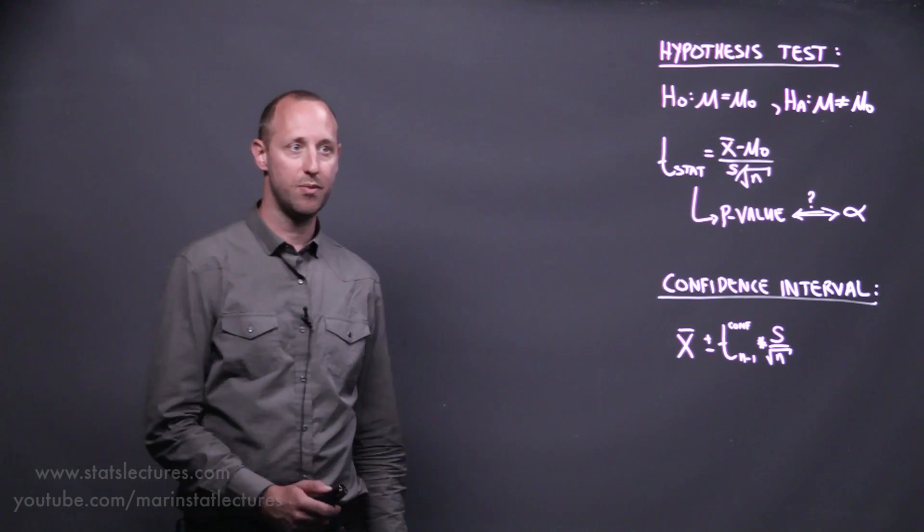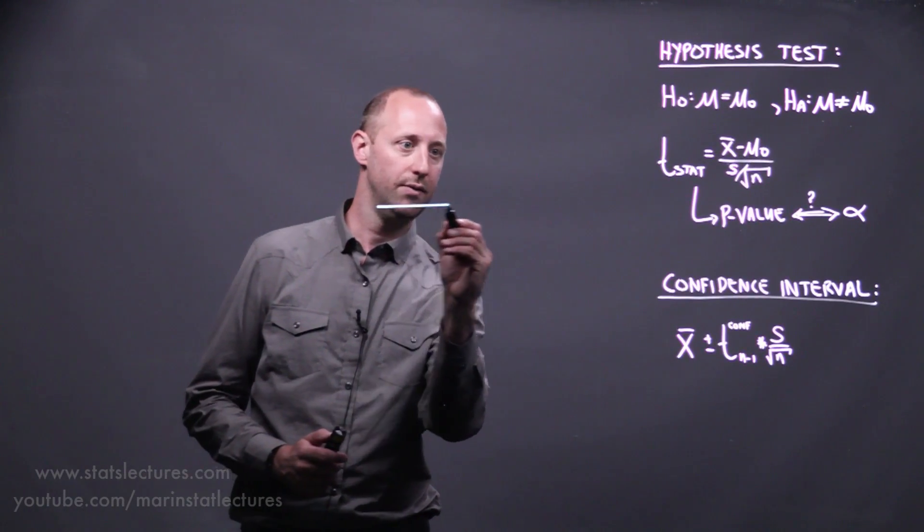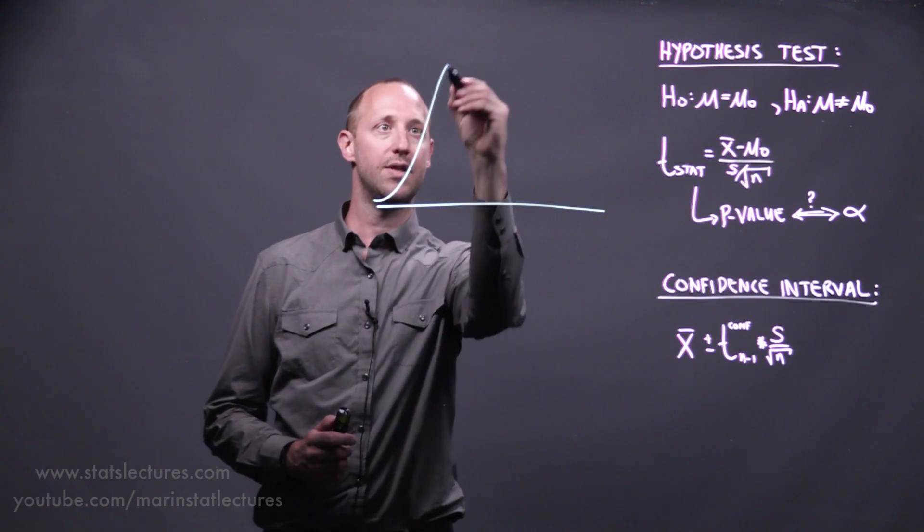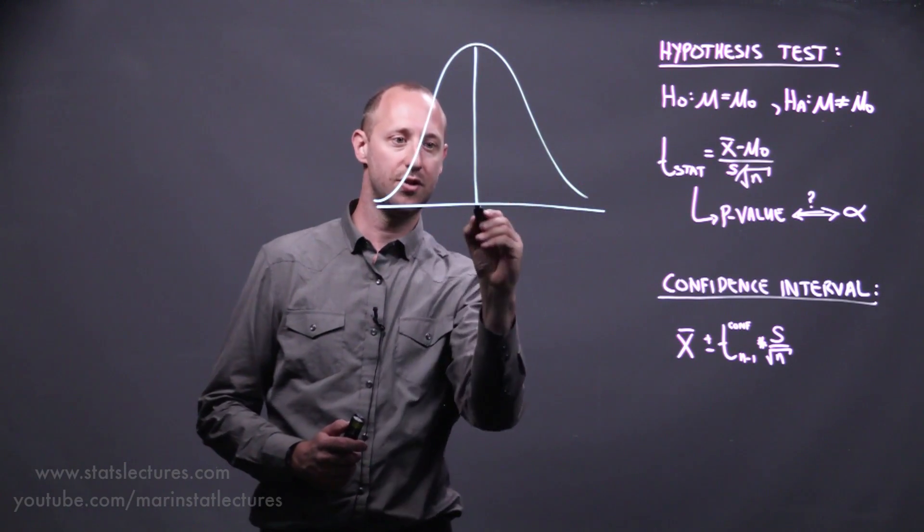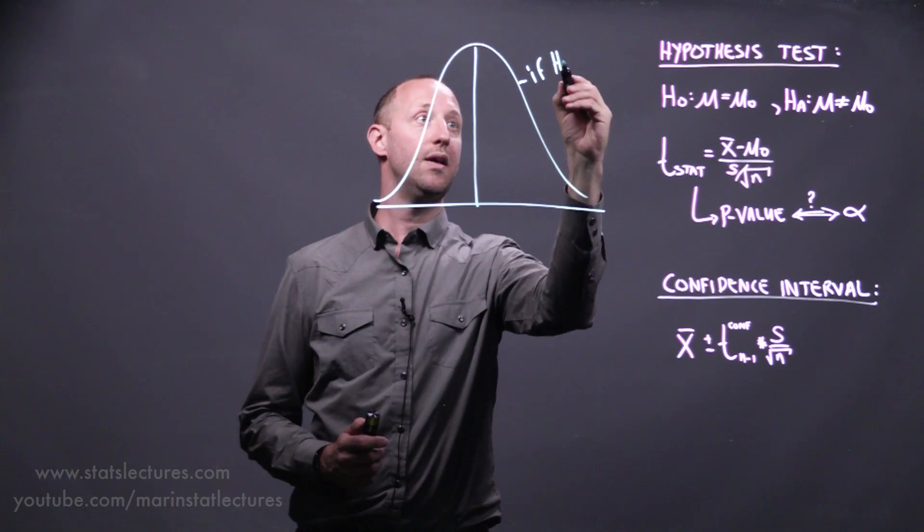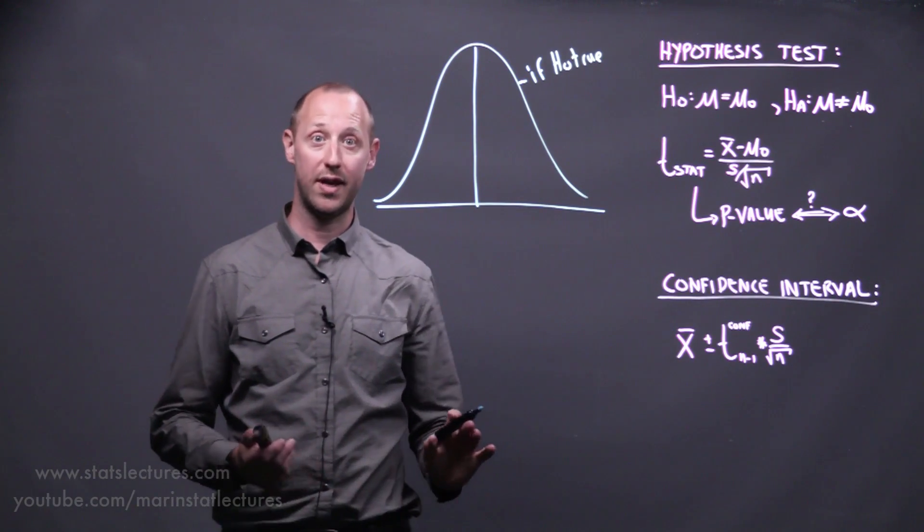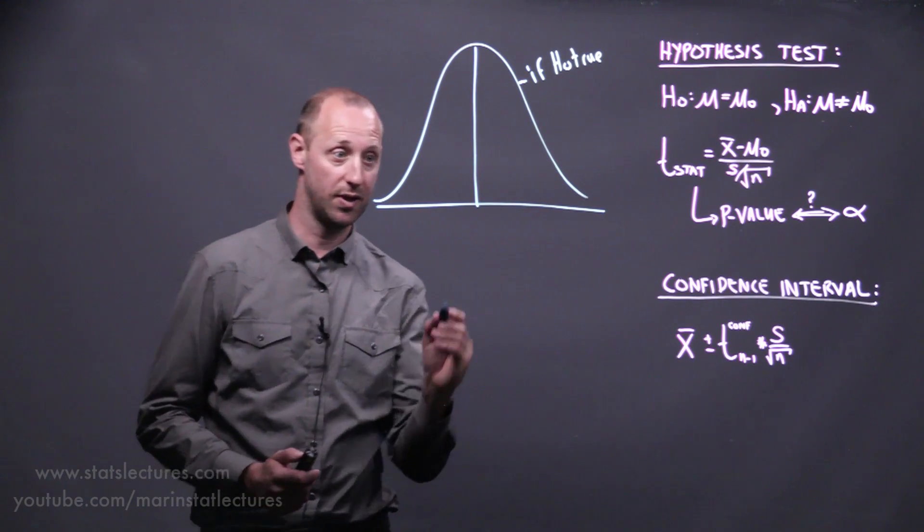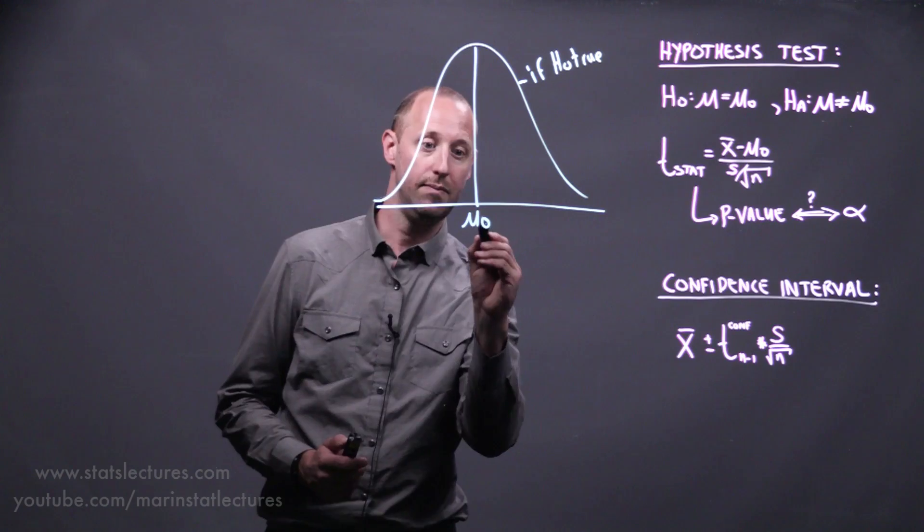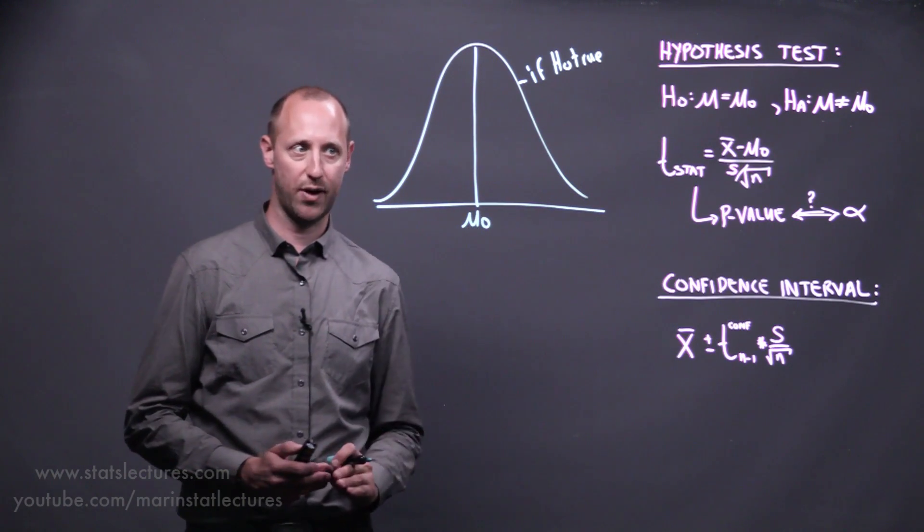First, let's talk about hypothesis testing. Here we start with the sampling distribution. This helps us describe, if the null hypothesis is true, what's the distribution of all the sample means or sample estimates we could get? Here's what we expect the sample mean to be. We know it's going to vary a bit.